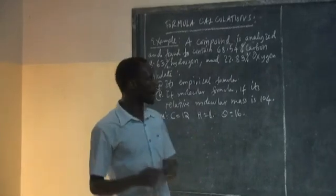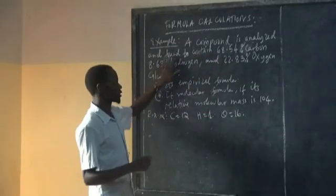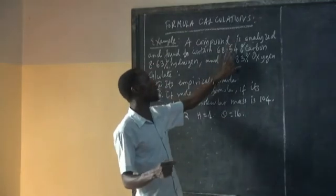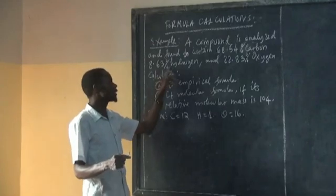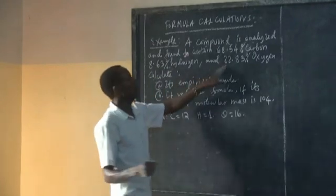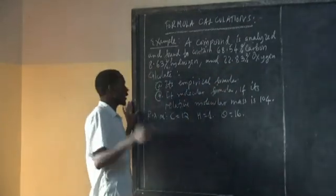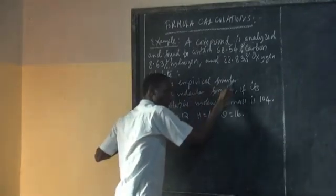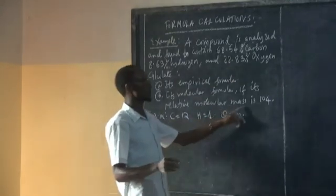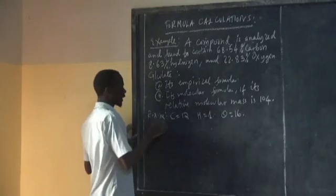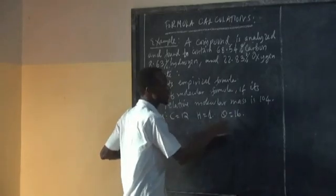We have to go step by step. I have written an example here. A compound is analyzed and found to contain 68.54% carbon, 8.63% hydrogen, and 22.83% oxygen. Calculate: (A) the empirical formula, (B) the molecular formula. The relative molecular mass is 104. Given that the relative atomic mass for carbon is 12, for hydrogen is 1, and for oxygen is 16.